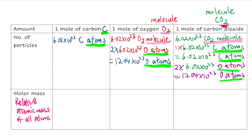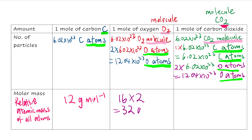For carbon: on the periodic table the mass number is 12, so the molar mass of carbon is 12 grams per mole. For oxygen: the relative atomic mass of O is 16, but since you have O2 there are two oxygen atoms, so you multiply by two — giving 32 grams per mole.